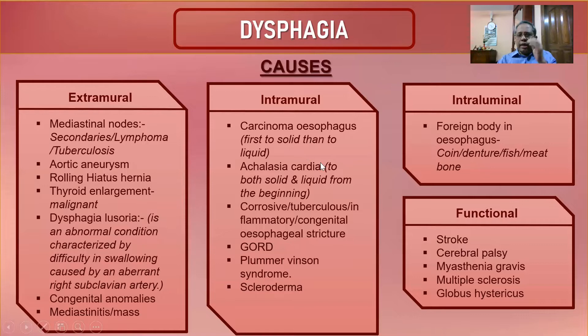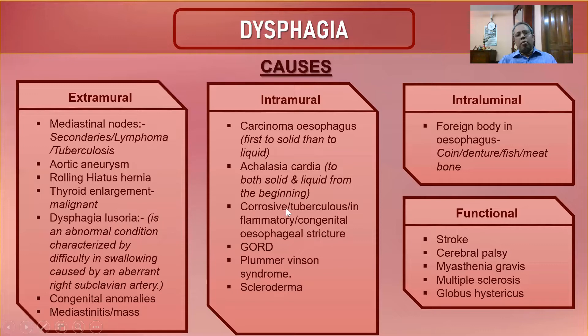In achalasia cardia, the dysphagia pattern is different: it is for liquids first, or both solids and liquids from the very beginning — not solids first. This is a basic difference from carcinoma. Other intramural causes include corrosive ingestion — such as acid or alkali — which causes chemical burns, ulceration, and subsequent stricture formation presenting as dysphagia.